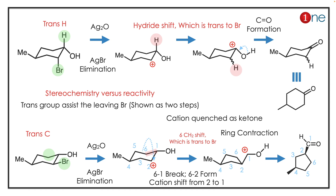The cation forms near the alcohol and it is quenched as an ether. In the second reaction, the ring carbon is trans, so ring carbon migration occurs — you have ring contraction. Because only the carbon is trans, migration happens, the cation forms near the alcohol, and it quenches to give the salt as the final product.